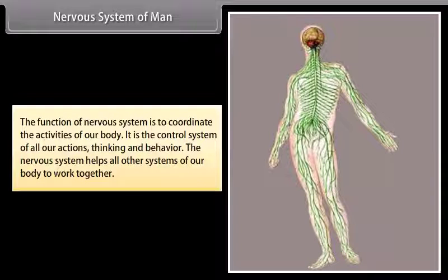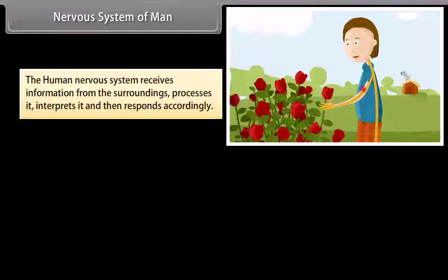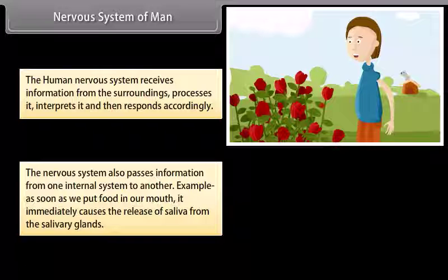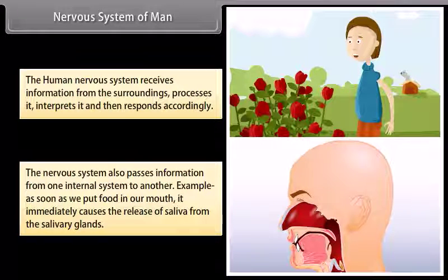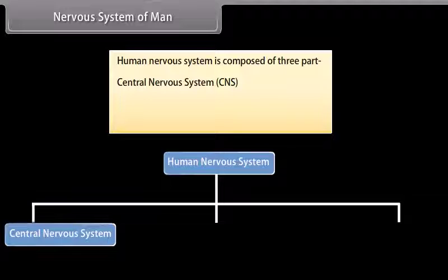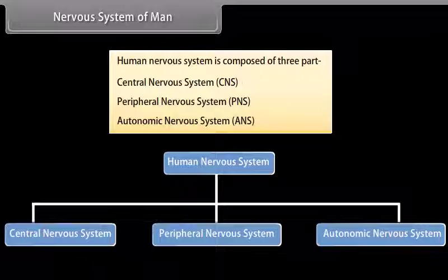The function of the nervous system is to coordinate the activities of our body. It is the control system of all our actions, thinking and behavior. The nervous system helps all other systems of our body to work together. The human nervous system receives information from the surroundings, processes it, interprets it, and then responds accordingly. It also passes information from one internal system to another; for example, as soon as we put food in our mouth, it immediately causes the release of saliva from the salivary gland. Human nervous system is composed of three parts: central nervous system (CNS), peripheral nervous system (PNS), and autonomic nervous system (ANS).